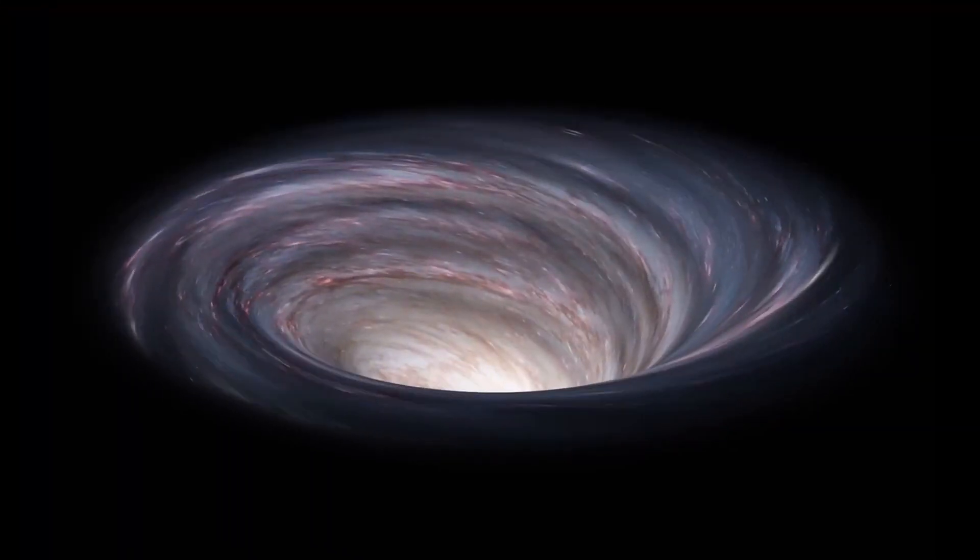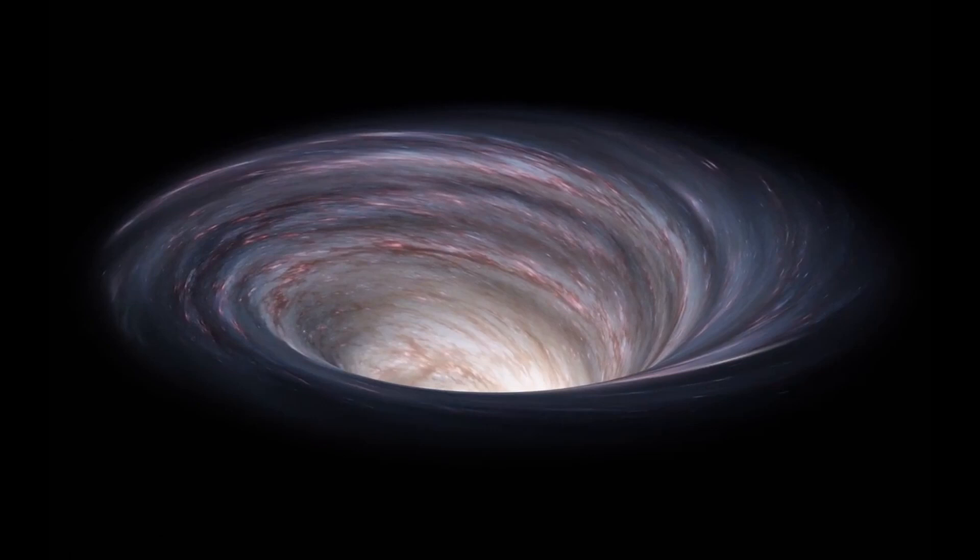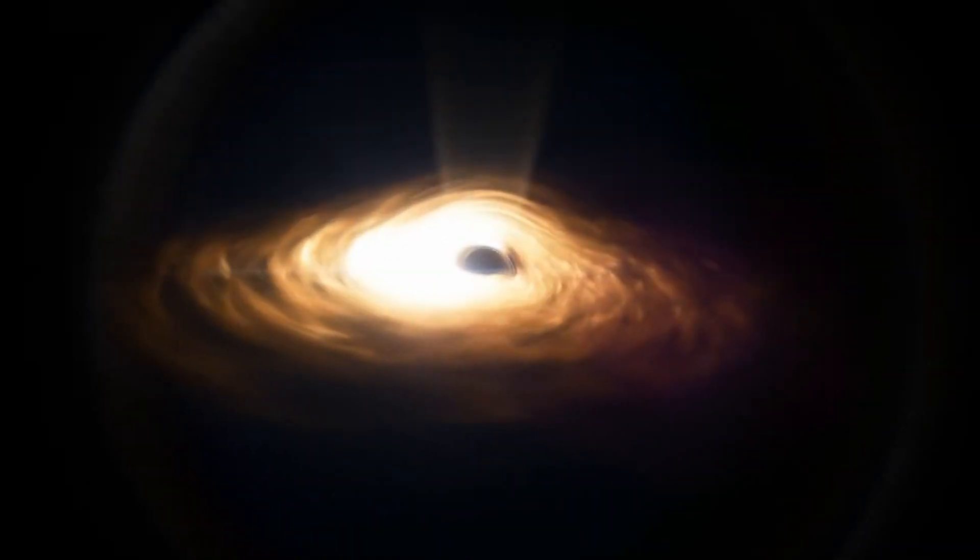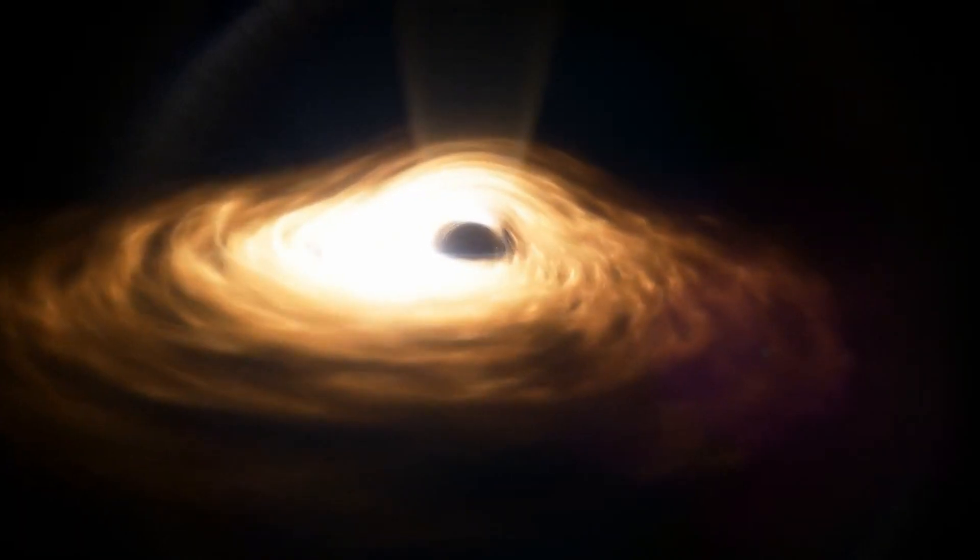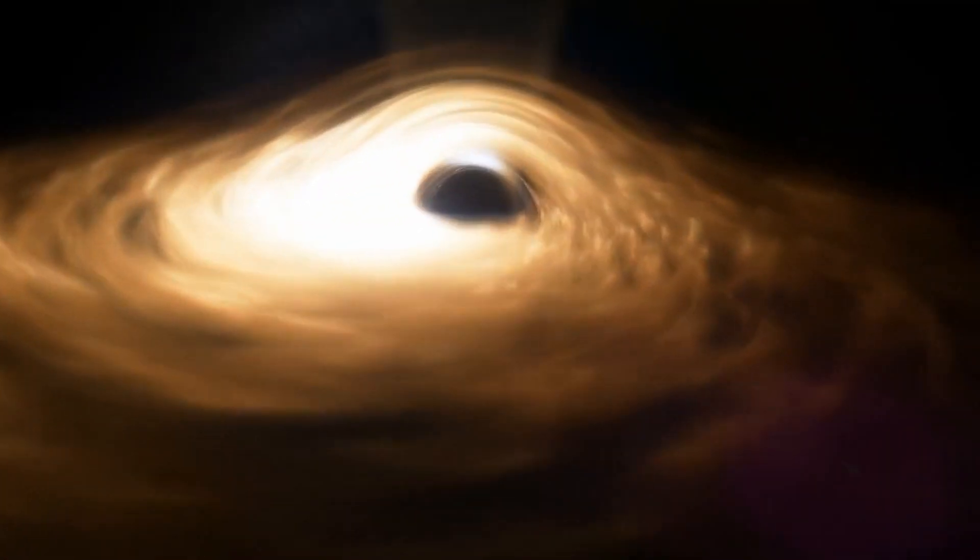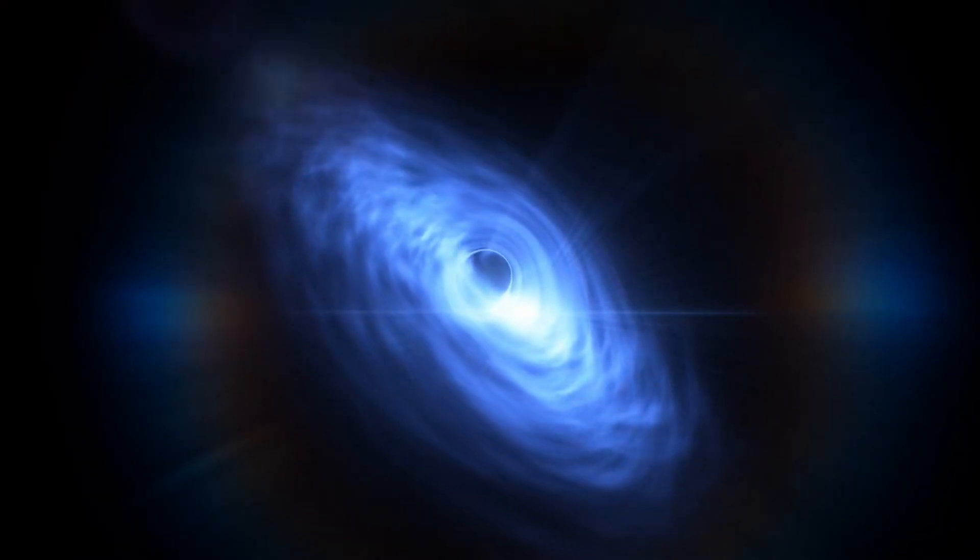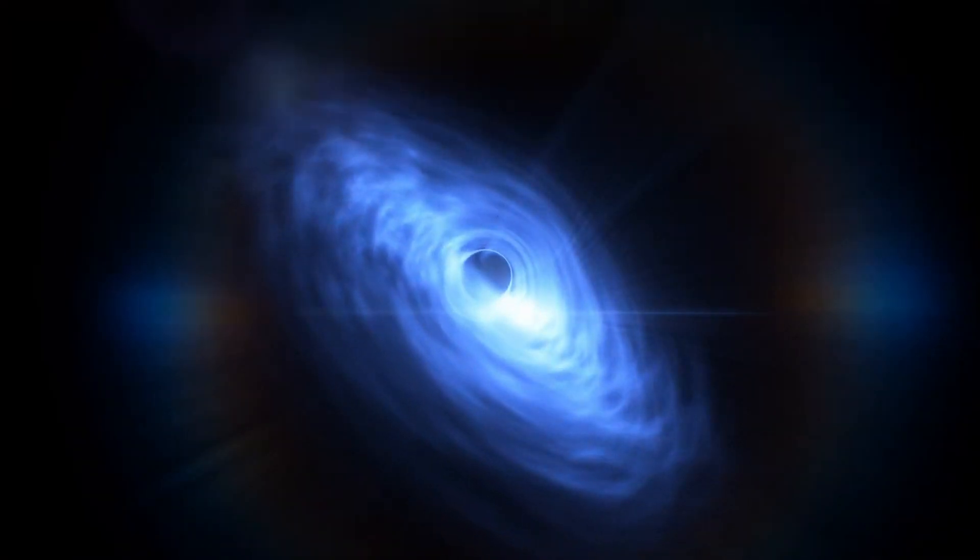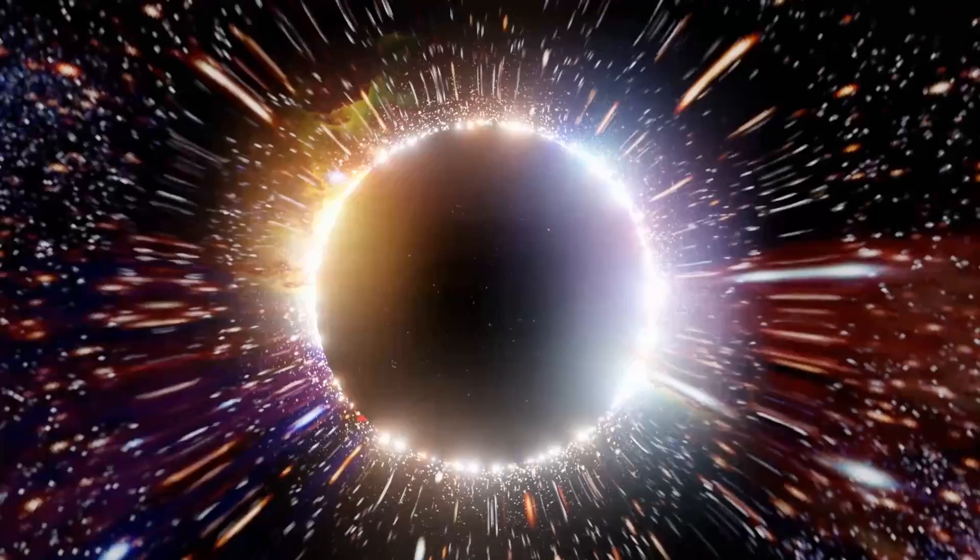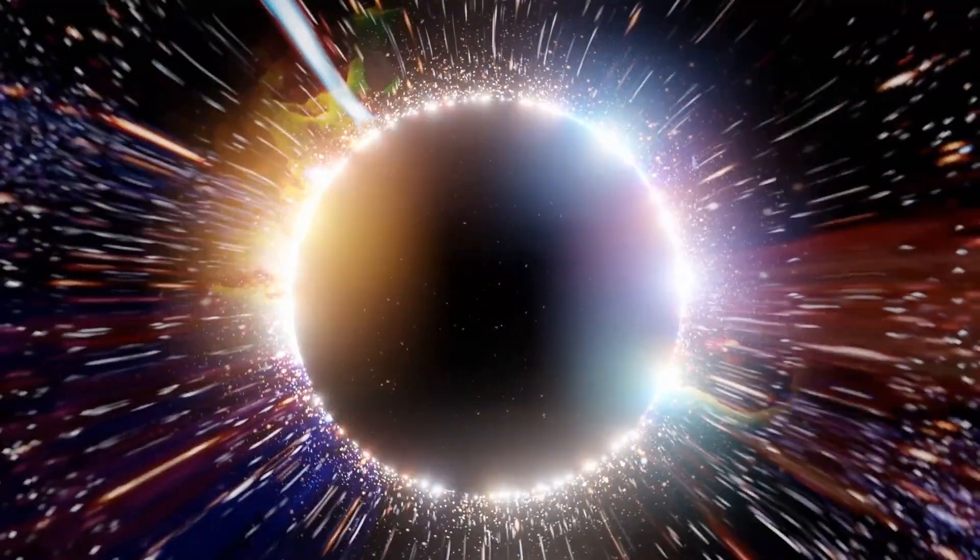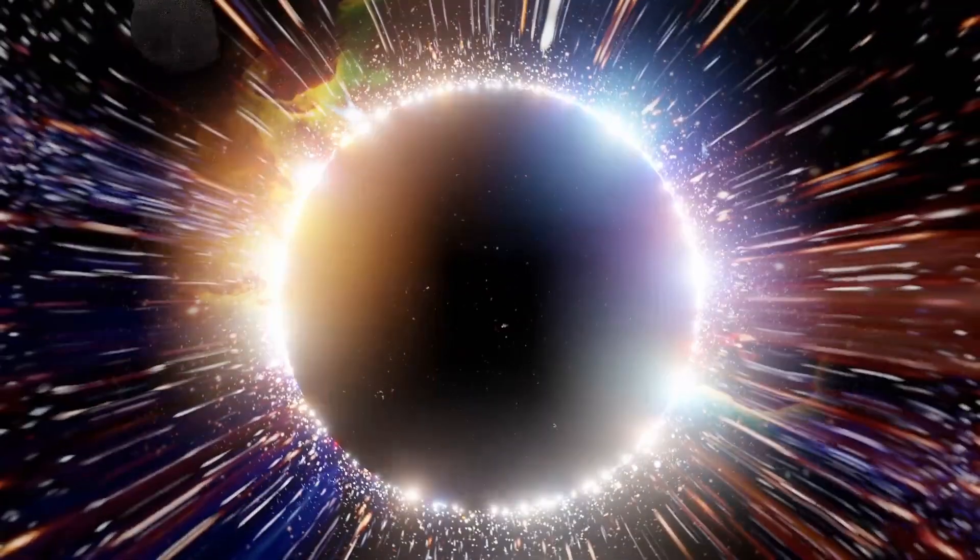It is currently impossible to see past the event horizon of a black hole. This is because no information can escape from within the event horizon, so any object that passes the event horizon is lost forever. However, scientists can observe the effects of the black hole on its surroundings, such as the gravitational lensing of light around the black hole and the emission of radiation from material falling into the black hole.